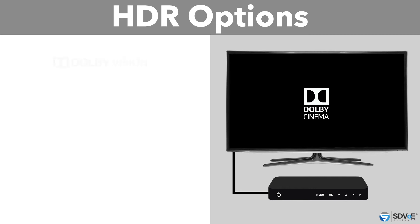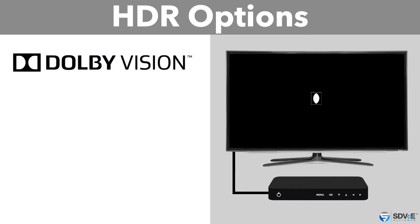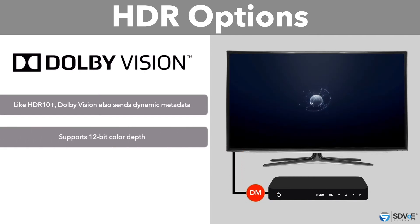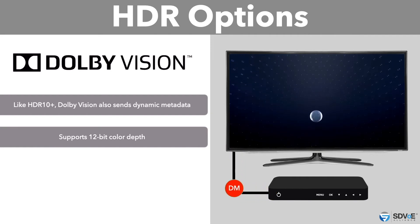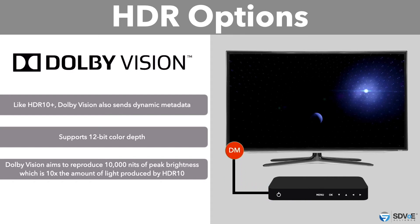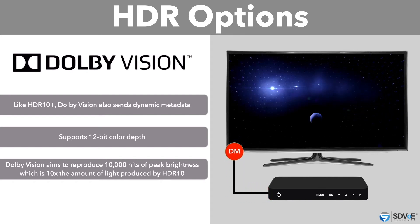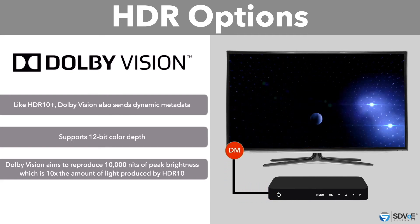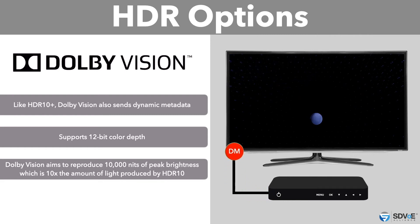Dolby Vision is a proprietary HDR standard introduced by Dolby Laboratories. Like HDR10+, Dolby Vision also sends dynamic metadata to the TV, and further supports 12-bit color depth, which is 4,096 shades of each primary color. Dolby Vision aims at reproducing 10,000 nits of peak brightness — far more than that offered by its counterpart HDR standards — suggesting that TVs with Dolby Vision can produce 10 times the amount of light than HDR10.